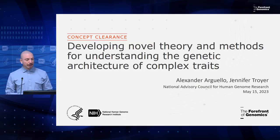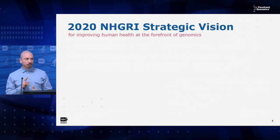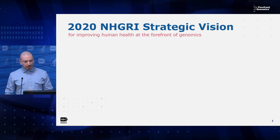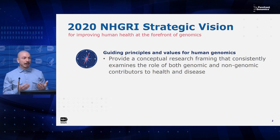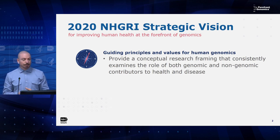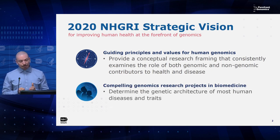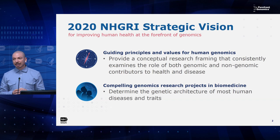I want to start by reminding everyone of two points from NHGRI's 2020 Strategic Vision. The first is a guiding principle or value: when conducting and interpreting research, we keep in mind that both genetic and non-genetic factors contribute to health and disease. The second is a research goal or objective, which is to determine the genetic architecture of most human diseases and traits.